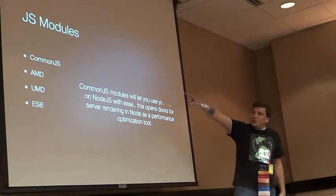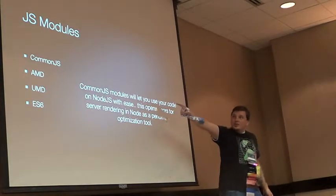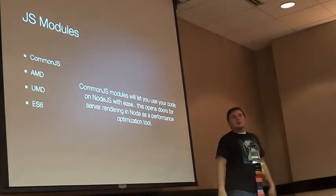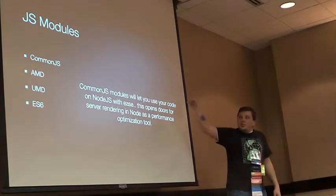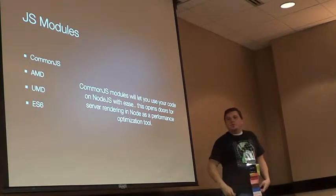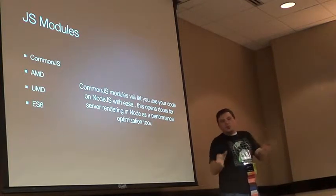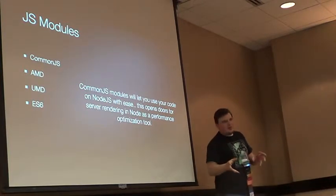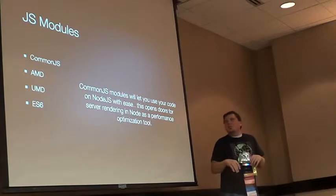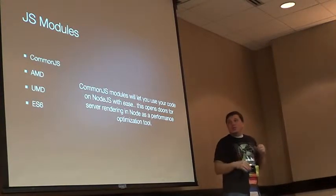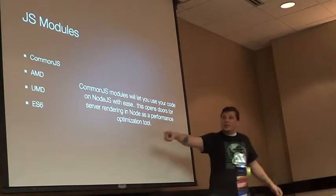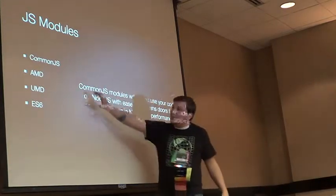CommonJS is what Node uses — you'll see it if you see the word 'require.' AMD is similar but was pointed at the browser; it has a slightly uglier syntax. UMD is a combination of these two and is usually an output target for a transpiler that will rewrite your code so that either interpreter can read it.